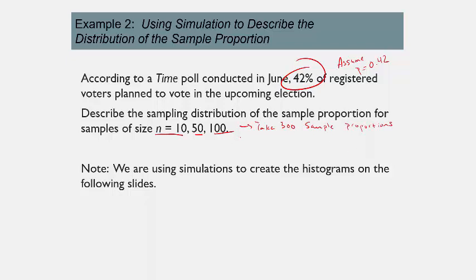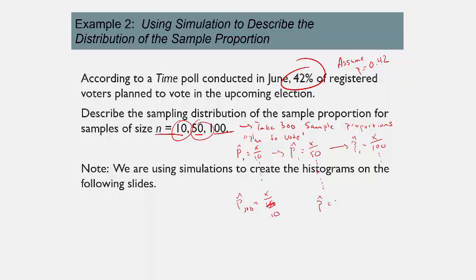We ask each sample: do you plan to vote in the upcoming election? For sample size 10, p-hat is how many people out of 10 plan to vote. For 50, it's out of 50, and for 100, it's out of 100. We repeat this 300 times for each sample size, giving us 300 p-hats per group. Let's look at the histogram for sample size 10.